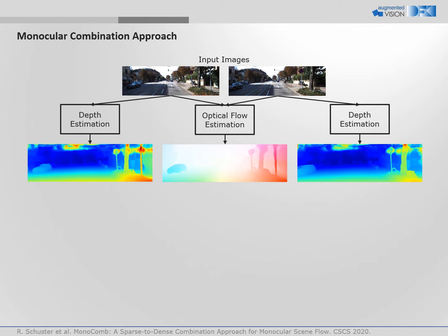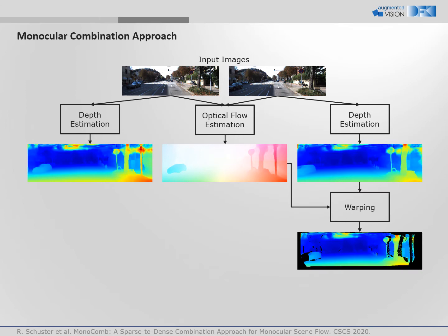This principle is the core of the combination approach: the complex scene flow problem is separated into less difficult sub-problems. Afterwards, these separate results get recombined into scene flow by warping the future depth estimate towards the reference frame using the optical flow.